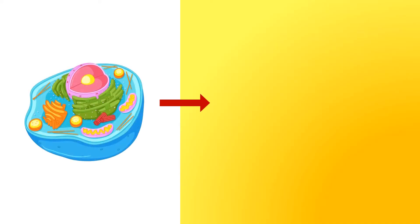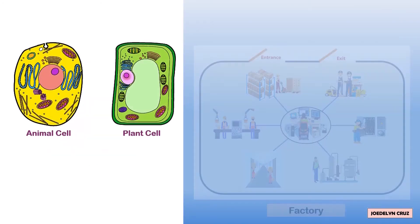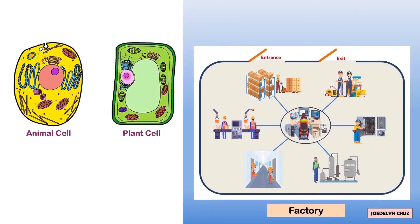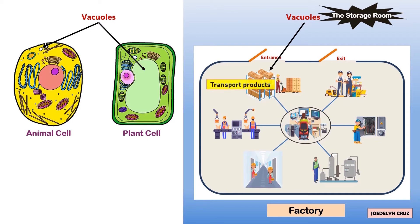In the cell as factory analogy, the storage room or stock room represents the vacuoles. In here, the products of the factory are being kept and transported out of the factory.